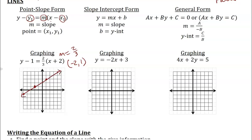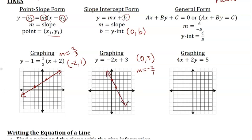For slope-intercept form, y equals mx plus b: m represents the slope and b represents the y-intercept, giving a point at (0, b). To graph y equals negative 2x plus 3, I start with the y-intercept at (0, 3), then use slope negative 2 over 1 — going down 2 and right 1 — to find additional points, connect them, and put arrows on the end.